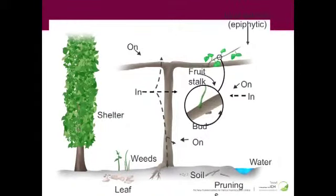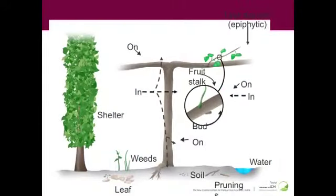I'm going now to change subjects and look at where the inoculum is. A lot of work has been done in New Zealand looking at where PSA would survive. We looked at the leaf surface, the cane surface and interior, the rootstock, inside and outside the trunk, the shelter belt, weeds, leaves on the ground, soil, prunings, and water.